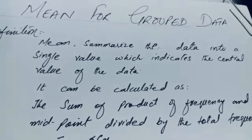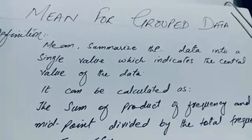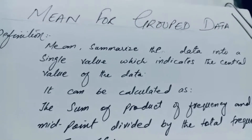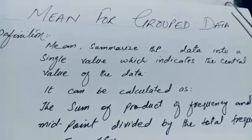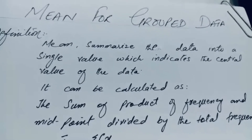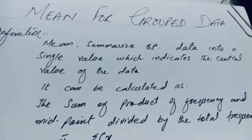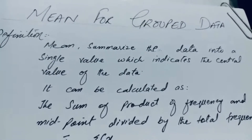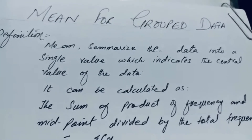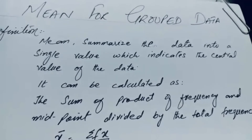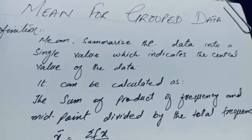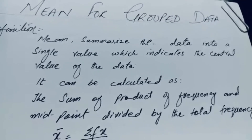Today's topic is mean for grouped data. The definition of mean for grouped data and ungrouped data is the same: it summarizes the data into a single value which indicates the central value of the data.